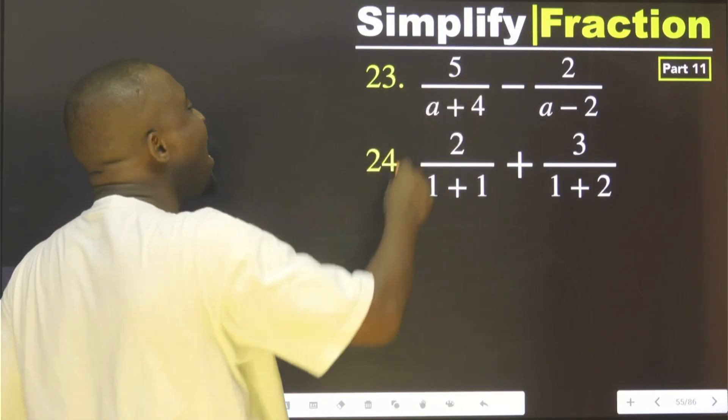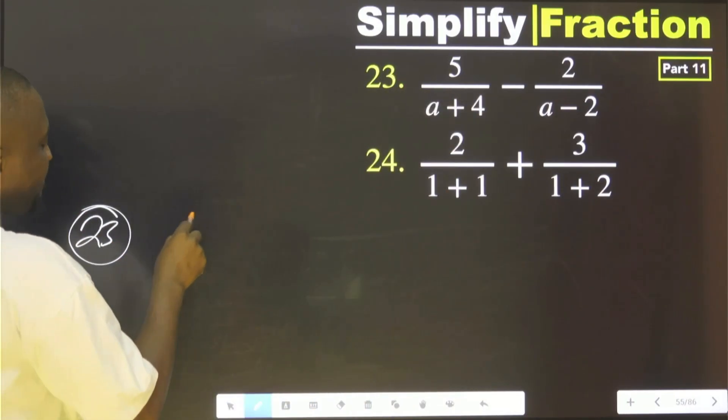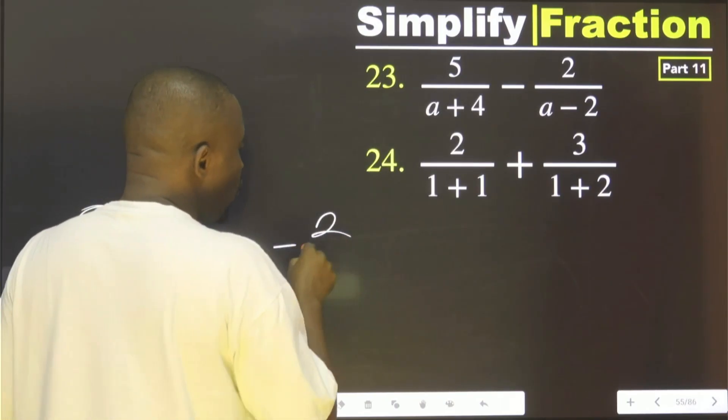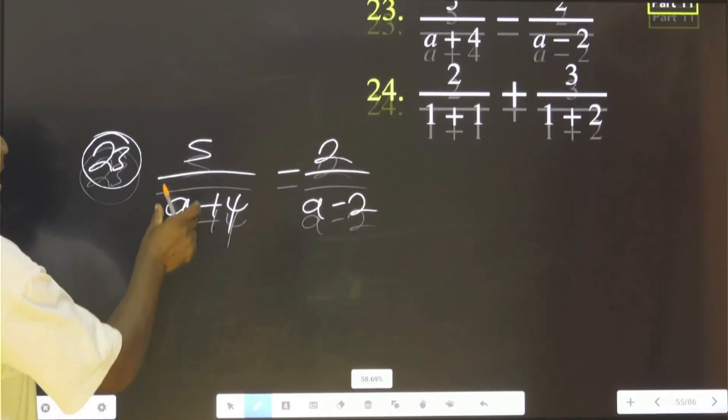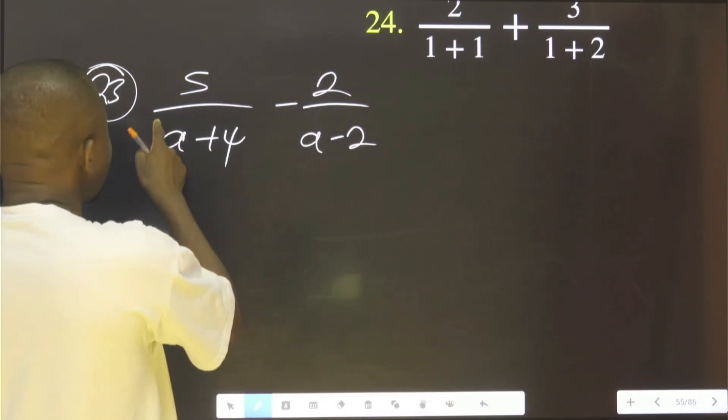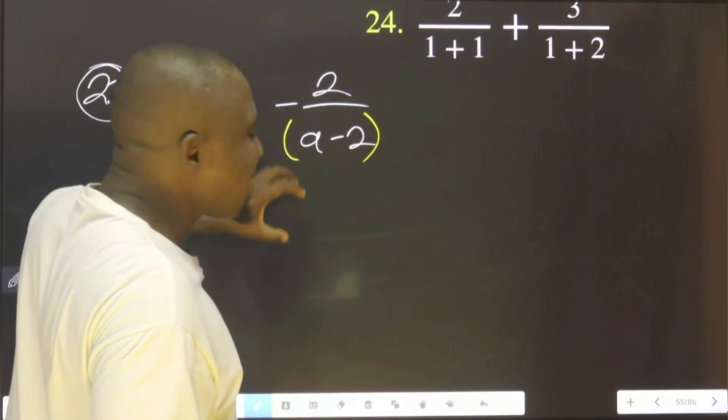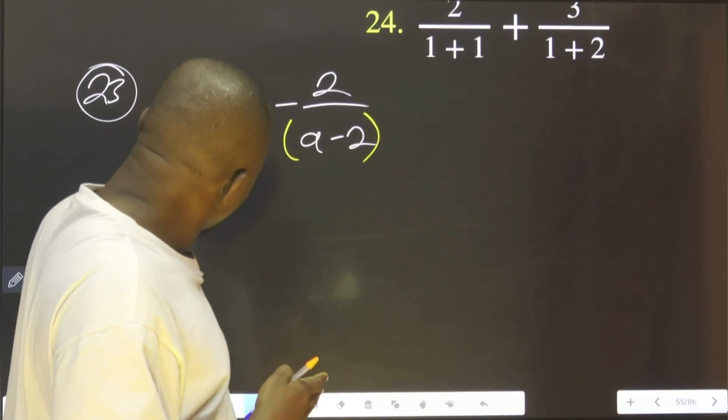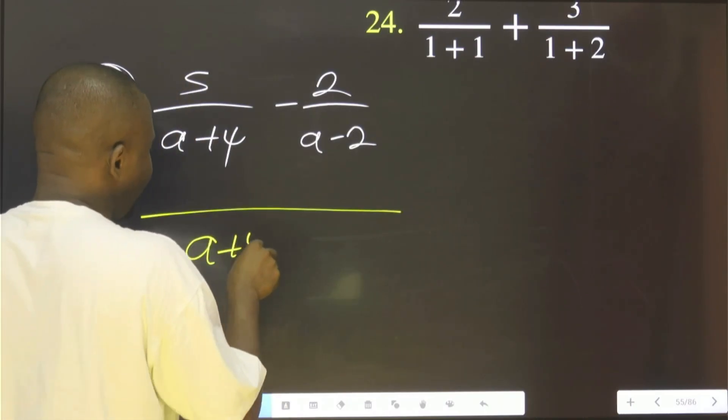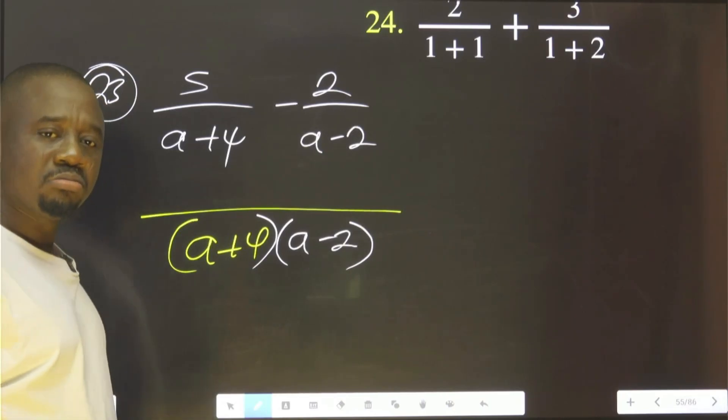So you can see we have a 23. That is 5 over a plus 4 minus 2 over a minus 2. Now we need to find the LCM of this denominator. The denominator are these two. So to get the LCM, we take this multiplied by this. That is a plus 4 multiplied by a minus 2.